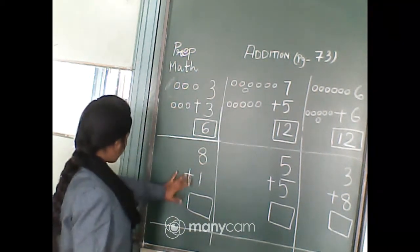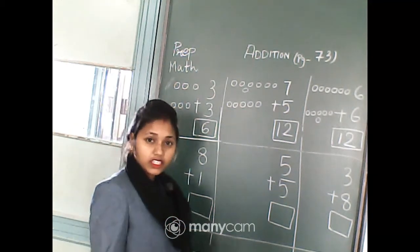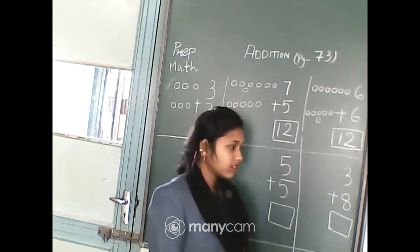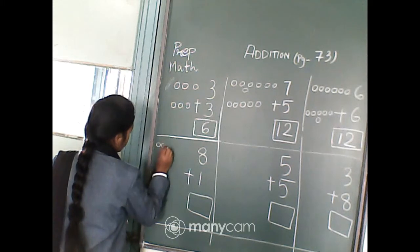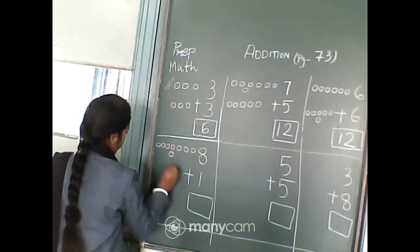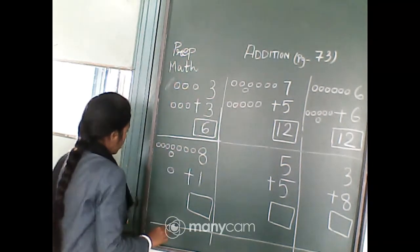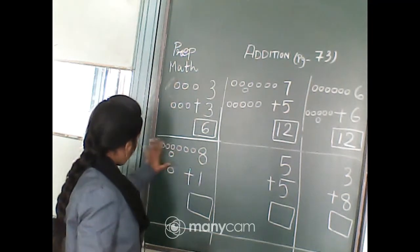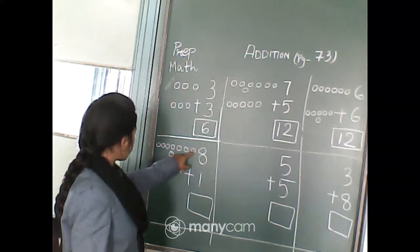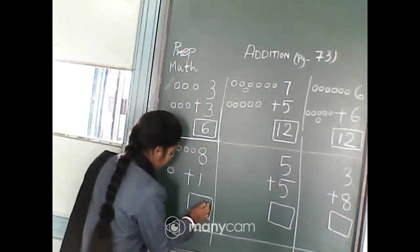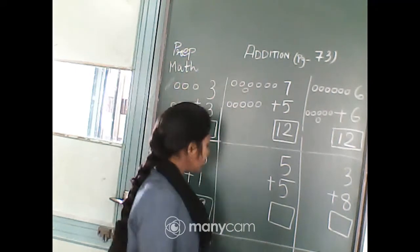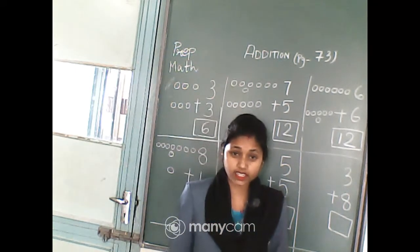Now tell me 8 plus 1, what will be the answer? As before, we will draw circles: 1, 2, 3, 4, 5, 6, 7, 8. And then we will draw 1 circle. Now we will count 8 plus 1, all the circles together: 1, 2, 3, 4, 5, 6, 7, 8, 9. So 8 plus 1 equals 9. After 8 we will count only one digit: 8, 9.